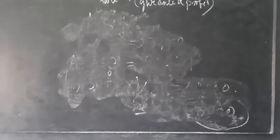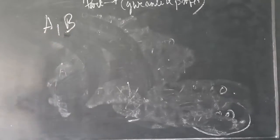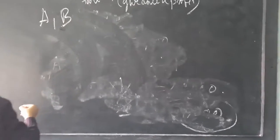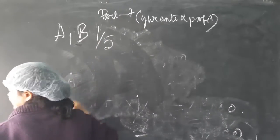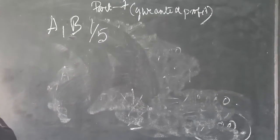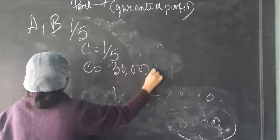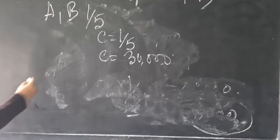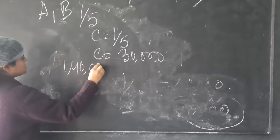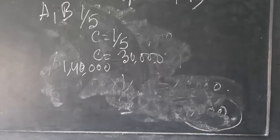Now let's look at a new problem. A and B are partners in the firm sharing profit and losses equally. During the year, the firm earned a profit of rupees 1,40,000. You are required to show the distribution of profit amongst A, B, and C.